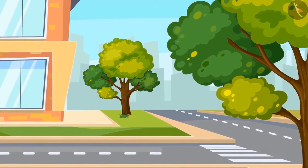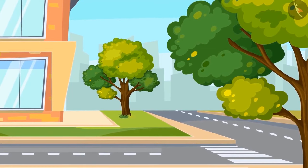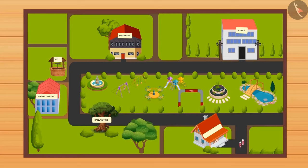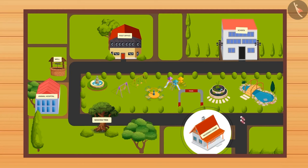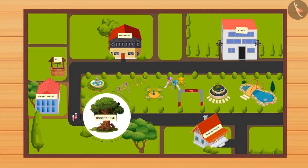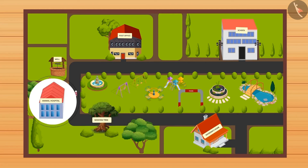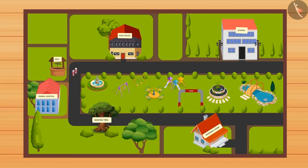This path goes from Nasima's home to her school. Let's see how she reaches her school every day. She takes a left from her house, then a right from the banyan tree, then goes straight from the animal hospital, then right from the well, straight from the post office, and there she arrives at the school.